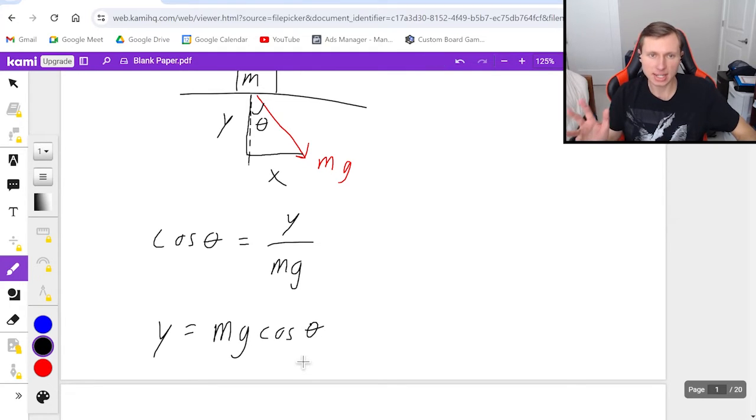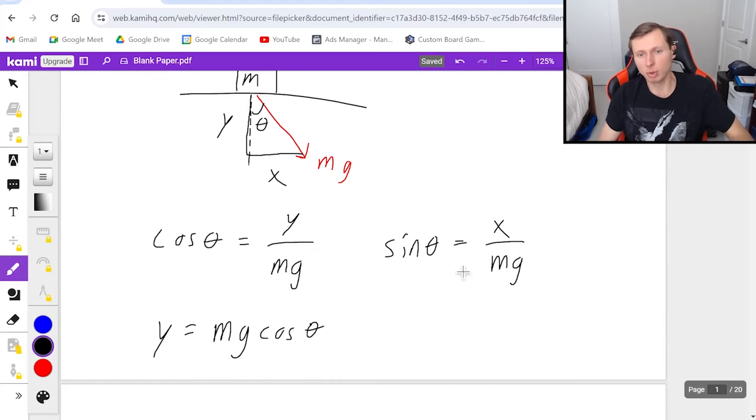If I want to do the same thing for x it's the opposite leg so I will be using sine. In other words sine theta equals opposite x over hypotenuse mg. Yes mg is the hypotenuse and then multiply both sides by mg, looks like the x component is equal to mg sine theta.